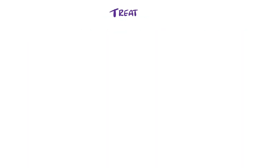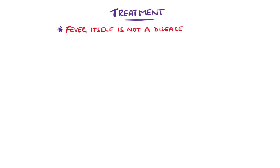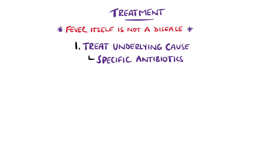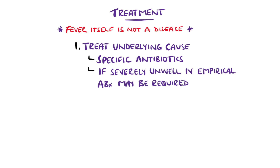Treatment depends largely on the underlying suspected cause as well as its severity. Fever itself is a manifestation of an underlying process and does not require treatment unless it is causing discomfort to the child. The underlying cause should be treated when indicated. In those with suspected bacterial infections, antibiotics are used targeting the specific source, while in severely unwell patients empirical intravenous antibiotics may be required.